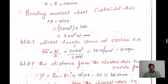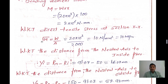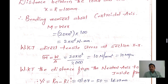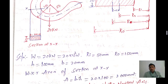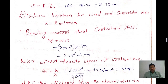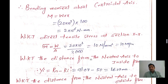Now we find the direct tensile stress at section X-X. The formula is: direct tensile stress σt = Load / Area = 20 × 10³ / 2000 = 10 N/mm². Since 1 N/mm² = 1 MPa, the direct tensile stress is 10 MPa.